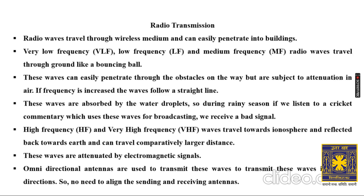When we are inside a city or small area, the first three variations — VLF, LF, and MF — are sufficient. But when we want to transmit radio waves to a larger distance, we need the advanced variations: HF and VHF. These are transmitted toward the ionosphere, reflected back toward Earth, and can travel a comparatively larger distance.